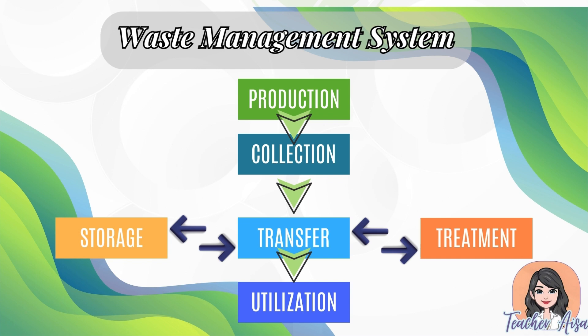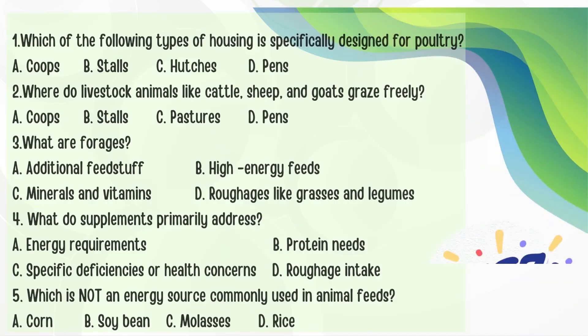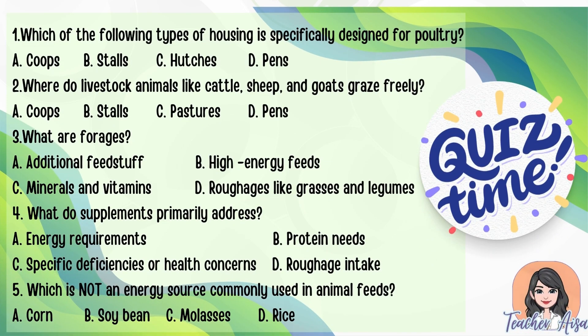Transfer: waste is transported to storage or treatment areas via pipelines, carts, or tanks. Storage: waste is temporarily stored in lagoons, pits, or silos to prevent contamination and facilitate treatment. Treatment: methods like composting, anaerobic digestion, or drying are used to reduce pathogens, odors, and volume. Utilization: treated waste is used as organic fertilizer, biogas, or animal bedding, promoting sustainability.